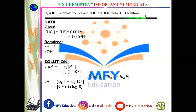Now we are going to discuss the shortcut technique to solve this type of numerical. बहुत आसान है। जब भी हमें acid given होगा, इसका मतलब H positive की concentration given होगी। जब भी हमें base given होगा, इसका मतलब OH negative की concentration given होगी। सबसे पहले जो भी concentration given होगी — for example 0.001 — इसको exponent में convert कर लेंगे।